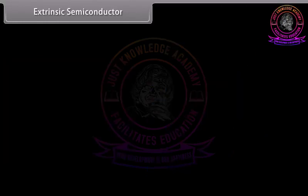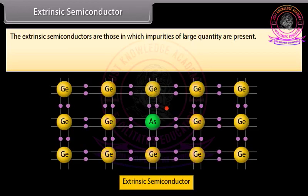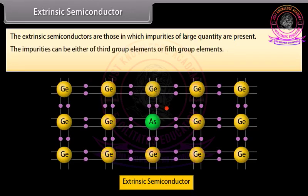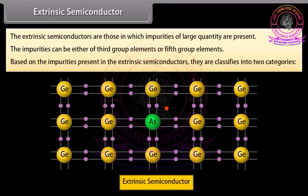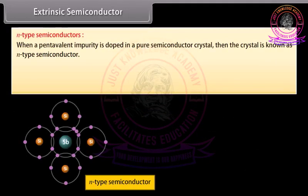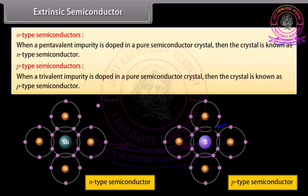Extrinsic semiconductors are those in which impurities of large quantity are present. The impurities can be either third group elements or fifth group elements. Based on the impurities present, extrinsic semiconductors are classified into two categories: N-type semiconductors, where a pentavalent impurity is doped in a pure semiconductor crystal; and P-type semiconductors, where a trivalent impurity is doped in a pure semiconductor crystal.